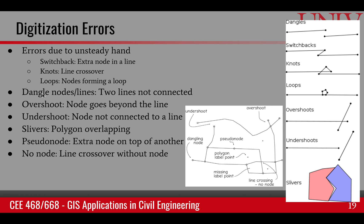Another type of error is a dangle — where two lines were supposed to be connected but are not, leaving the line dangling. Overshoot is when a point was supposed to connect to a line but went past it. Undershoot is the opposite — it was supposed to connect but didn't reach. Both can be corrected through snapping, as can dangles.